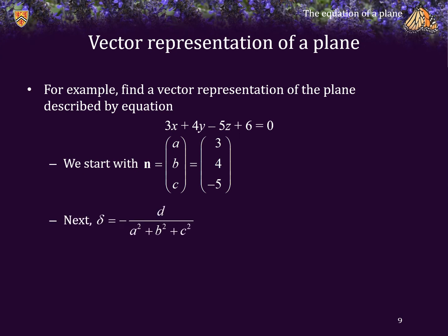Next, we calculate delta, which is negative d over a squared plus b squared plus c squared, and that's equal to negative 6 over 50.